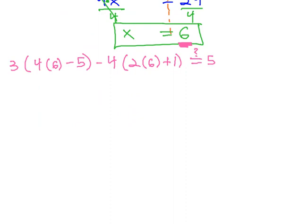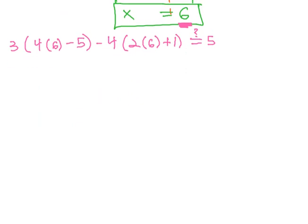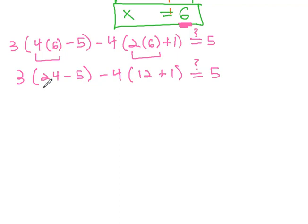Let me buy us a little bit more room, and as we use the order of operations, we have to simplify in the parentheses first, doing multiplication first. So, we have 3 times 24 minus 5, minus 4 times 2 times 6 is 12 plus 1. We're hoping that's equal to 5. We're getting closer. Finishing the parentheses will give us 3 times 19 minus 4 times 13, and we're hoping that equals 5.